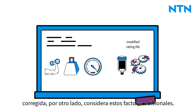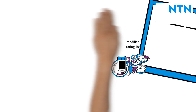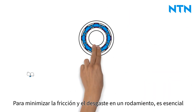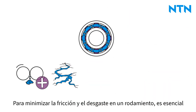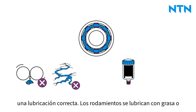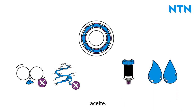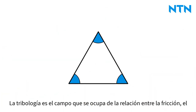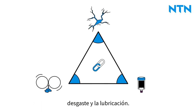The extended modified service life, on the other hand, considers these additional factors. In order to minimize friction and wear in a rolling bearing, correct lubrication is essential. Bearings are lubricated with either grease or oil. Tribology is the field that deals with the relationship between friction, wear, and lubrication.